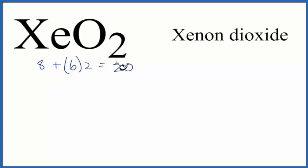20 valence electrons for XeO2. We'll put the least electronegative element in the center. That's Xenon, which is a noble gas, so it has an electronegativity of 0. So Xenon goes in the center, and then Oxygens, we have 2, 1 on each side.